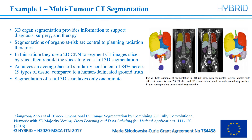Now I'm going to talk about three different examples showing where medical imaging segmentation has been applied to real problems. First, the example shown on the introduction slide from 2016. Here they use a deep learning network to segment several organs and tissues on a CT scan. 3D augmented segmentation provides information to support diagnosis, surgery and therapy, and is central to planning radiation therapies. In this paper they segment 2D slices separately, then combine the slices to give a full 3D segmentation. They achieve an average Jaccard similarity coefficient of 84% across 19 types of tissue compared to an expert-based ground truth. The segmentation of a full 3D scan takes only one minute, whereas the equivalent manual segmentation would take many hours.